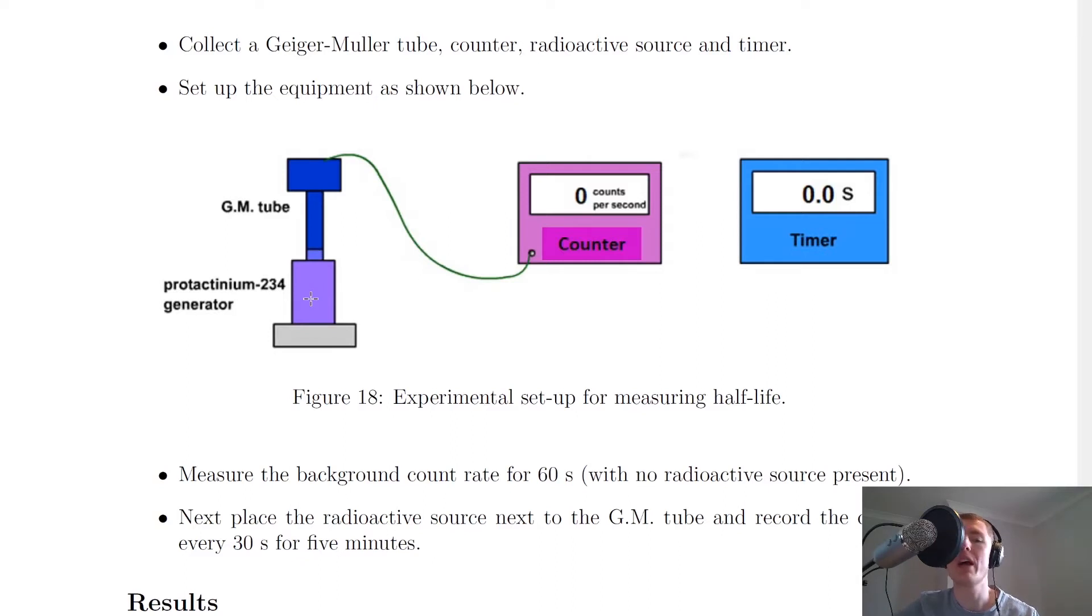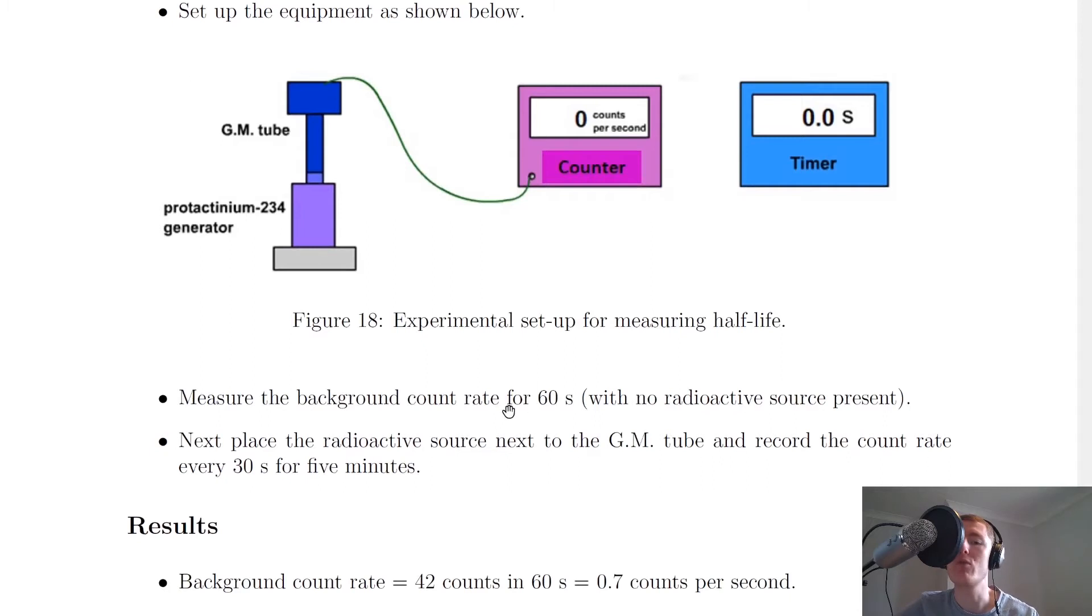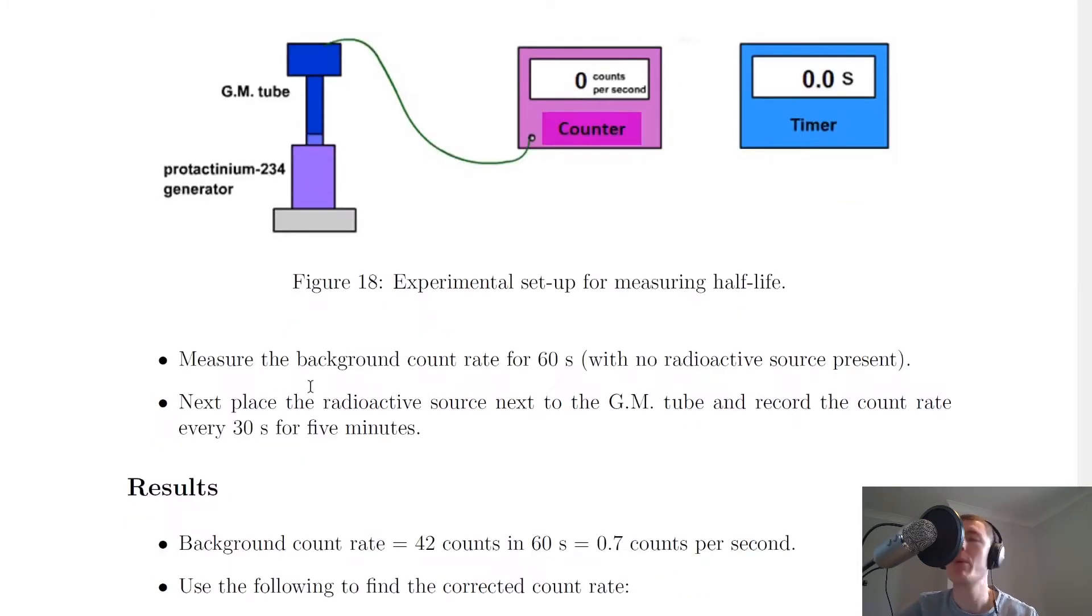What you would do first however is you would take away this protactinium-234 source and you would measure the background count rate for 60 seconds. So that's the count rate when there is no source present. And we would do this for 60 seconds and we would get some total number of counts of background radiation.